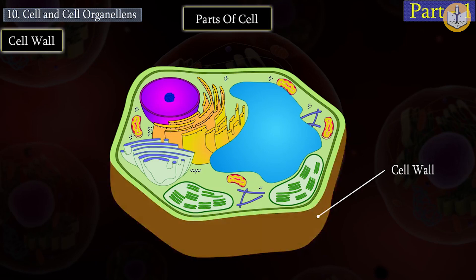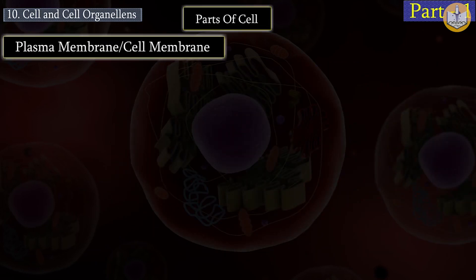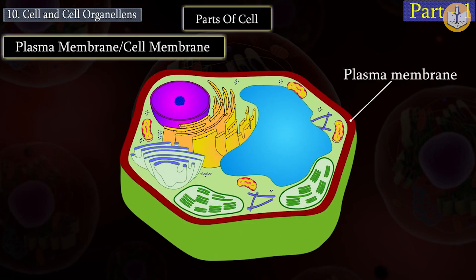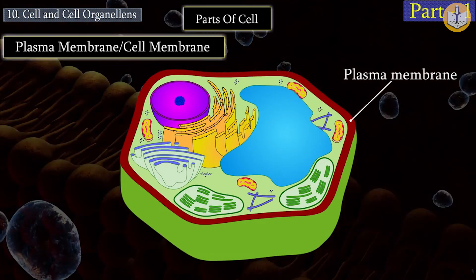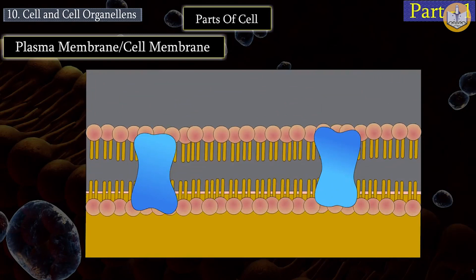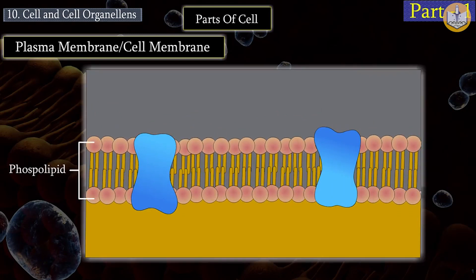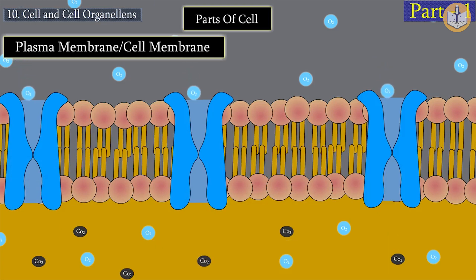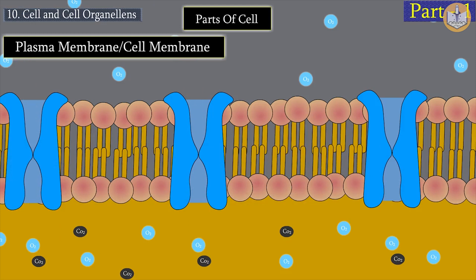The second part of the cell is the plasma membrane or cell membrane. It is a thin, fragile, and elastic covering that separates the cell components from the outer environment. Protein molecules are embedded in two layers of phospholipids. The plasma membrane is a selectively permeable membrane, as it allows some substances to enter the cell while preventing others.